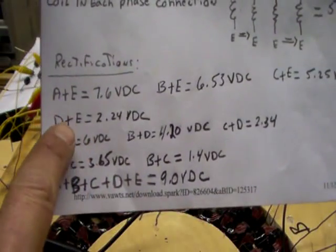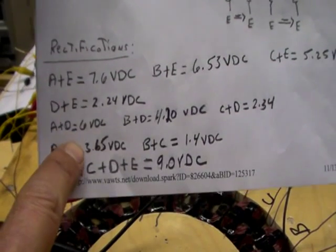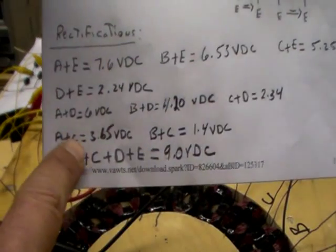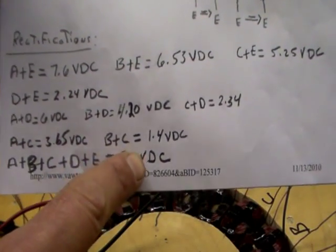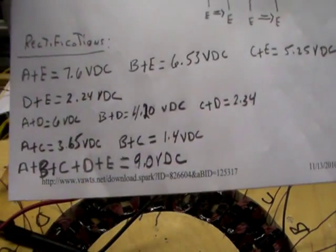It has to do with something that Steve mentioned here. But anyway, I'm sure you'll explain that. So then I went to A plus D, B plus D, and so on. When I got to B plus C, it gave me 1.4 volt DC.